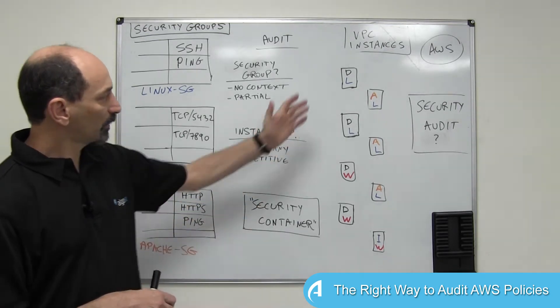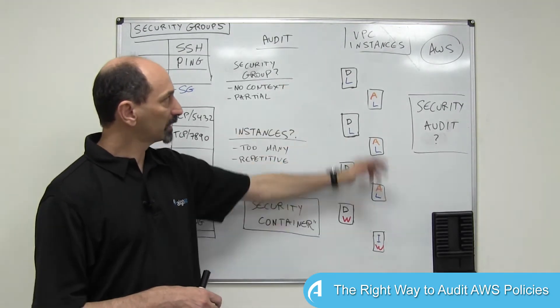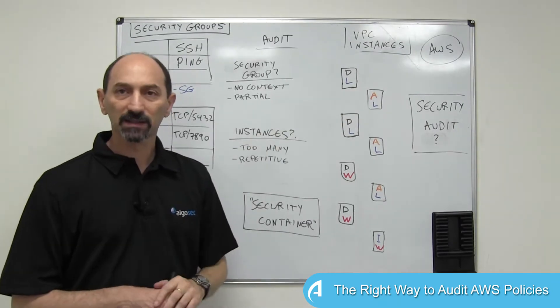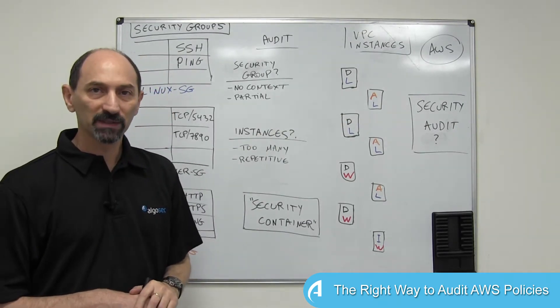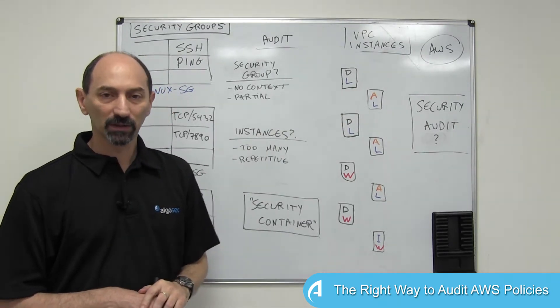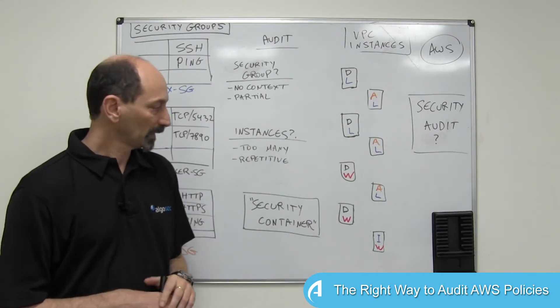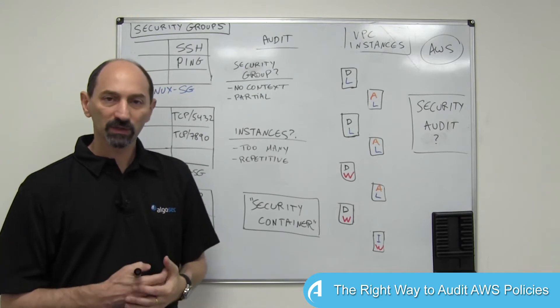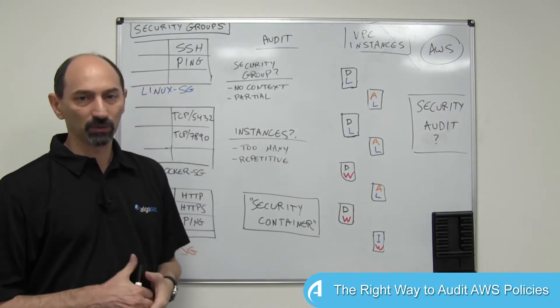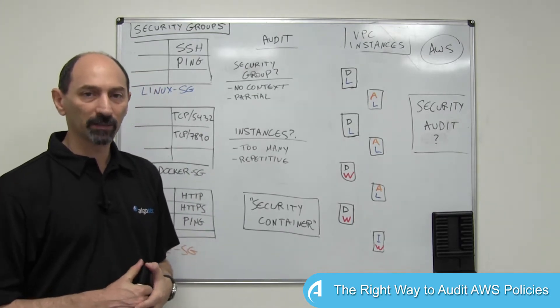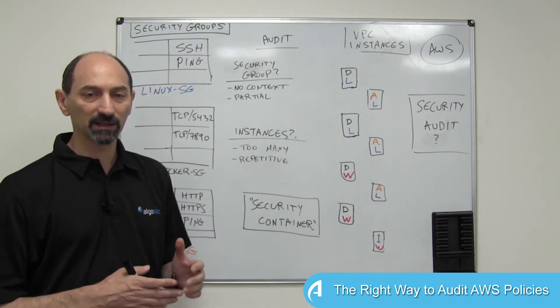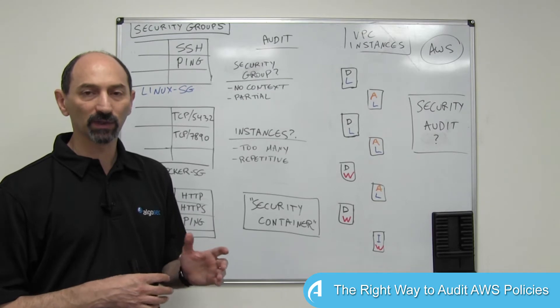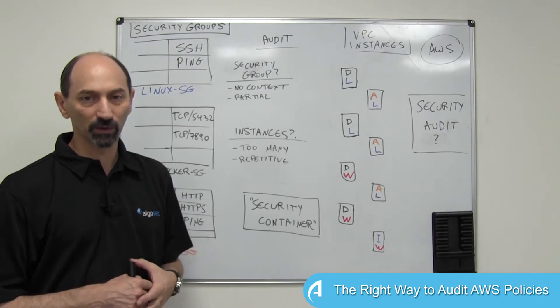And over here you have all the instances that belong to the VPC that you're currently auditing. So the question I'd like to think about today is: what is the level at which you're going to do your audit?